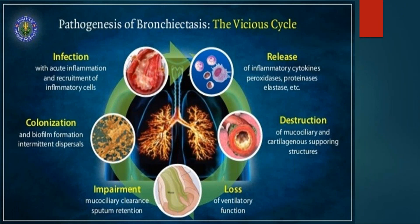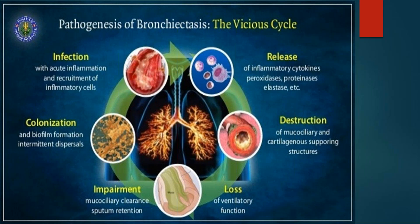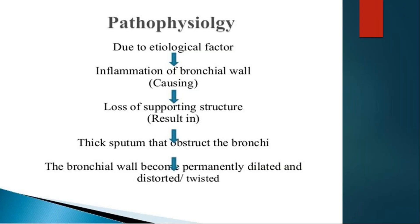This pathogenesis is a vicious cycle. Due to colonization and biofilm formation from infection, there is recruitment of inflammatory cells. These release inflammatory mediators like cytokines, peroxidases, proteinases, and elastase, which damage the collagen and smooth muscle in the bronchial wall, leading to destruction of mucociliary and cartilage supporting structures, loss of ventilatory function, ventilation-perfusion mismatch, and impaired mucociliary clearance, leading to sputum retention — and then again infection.